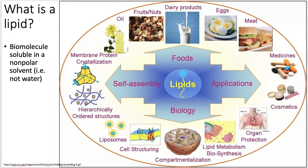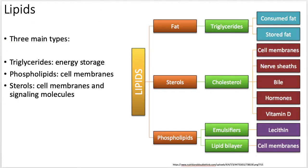When you think lipids, basically what you're thinking of are fats. They have different abilities. We're going to talk mostly about this, but they do have a lot of functionalities in larger scale things like medicines. We all know what fats are — oils and fats. So there are three main types of lipids that we're going to talk about: triglycerides, which are our energy storage molecule, phospholipids for cell membranes, and sterols.